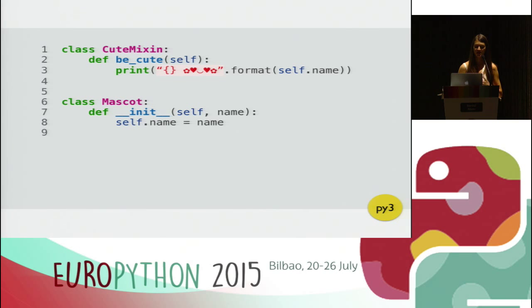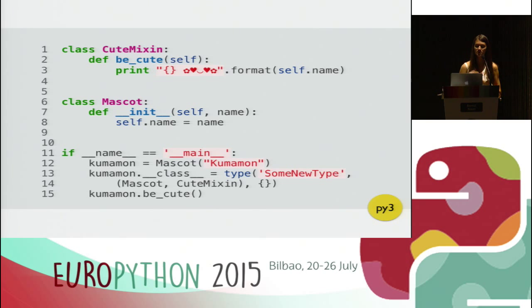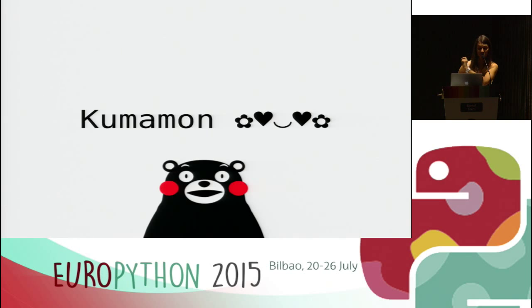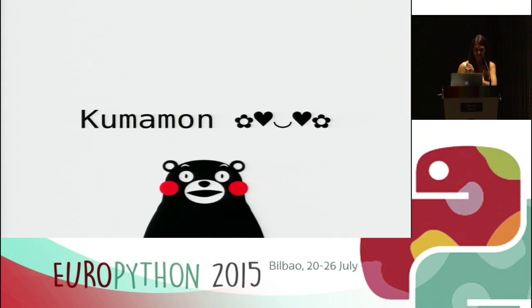What about Python 3 or new-style classes? The print is now a function. We can't modify bases as much as in Python 2, because bases is immutable. But we can change the dunder class attribute on an instance called kumamon, create a new type that includes the CuteMixin, and then make use of the beCute method — and this will work. If you ever do this, please make sure you do it for a very good reason, and provide plenty of documentation explaining the why. I have warned you.